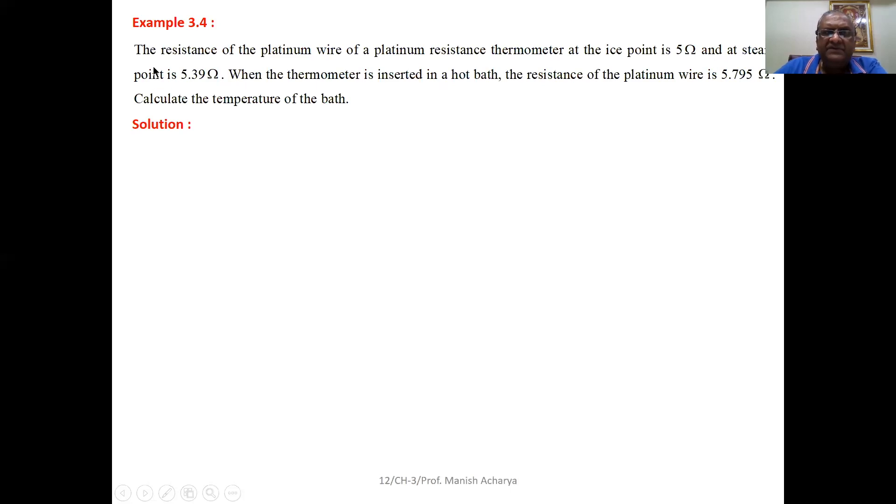Next example, 3.4. The resistance of a platinum wire of a platinum resistance thermometer at the ice point is 5 ohm and at the steam point is 5.39 ohm. When the thermometer is inserted in a hot bath, the resistance of the platinum wire is 5.795 ohm.